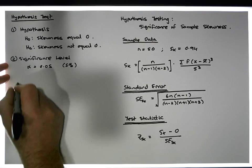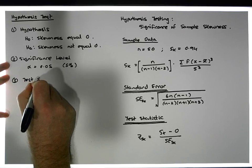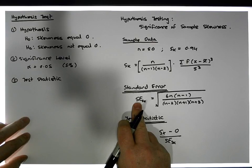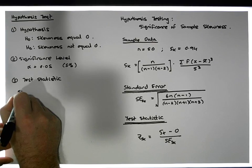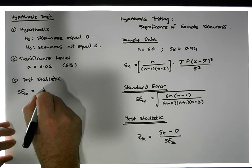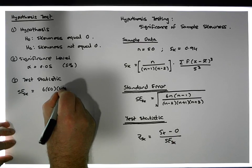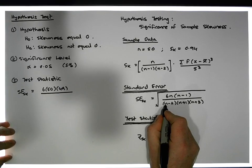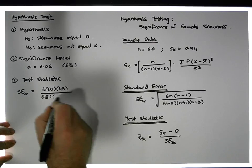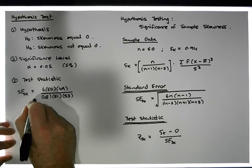Step three is our test statistic. To calculate it, we first need to calculate the standard error. The SE for skewness equals the square root of [6 × 50 × 49] / [48 × 51 × 53].